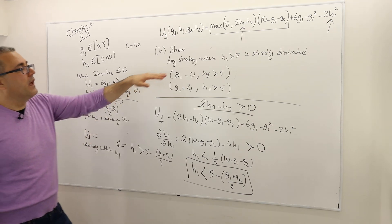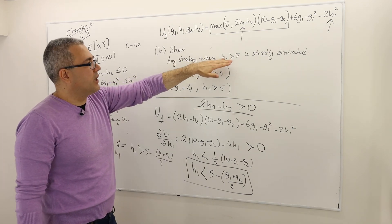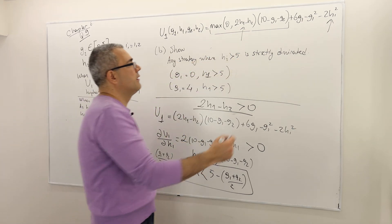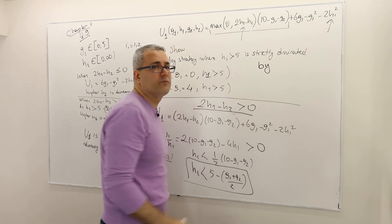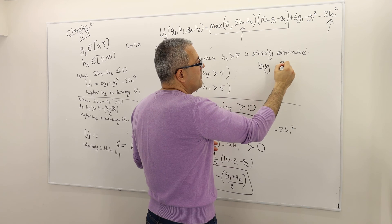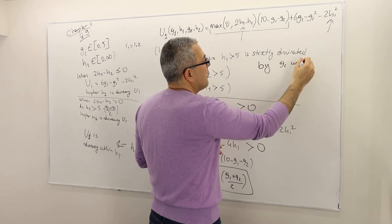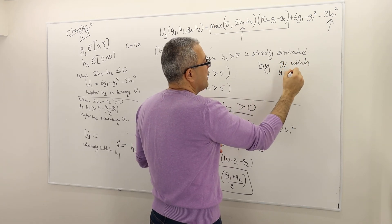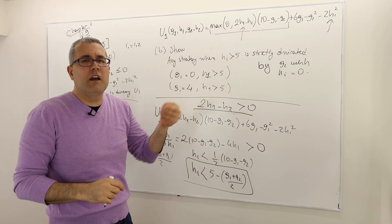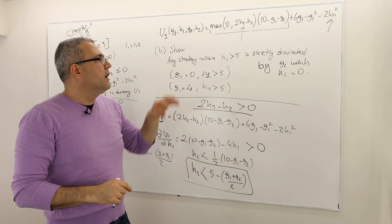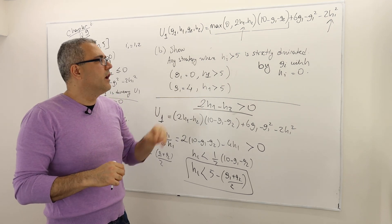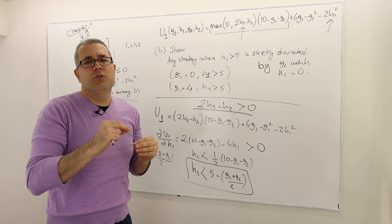So what does that mean? That means any strategy where H_i or H1 is strictly higher than 5 is strictly dominated by who? By the same strategy, I mean the same G_i with H_i equals 0. All right, so instead of picking H_i equals 5 or higher than 5, keep G_i the same, all right, whatever the G_i you're selecting, but select H_i equal to 0, the lowest minimum thing.